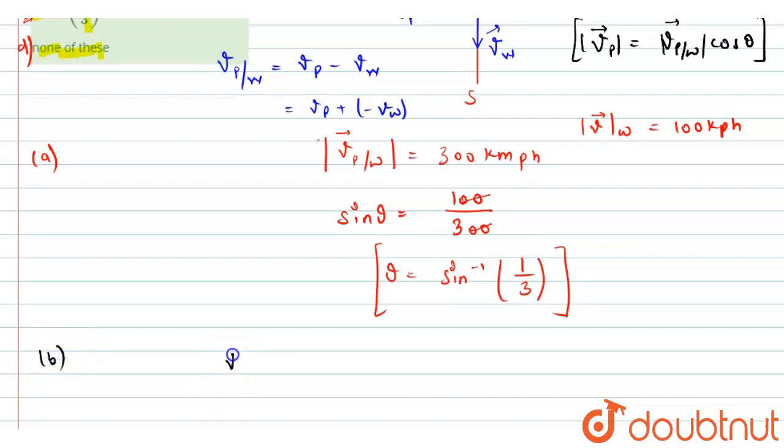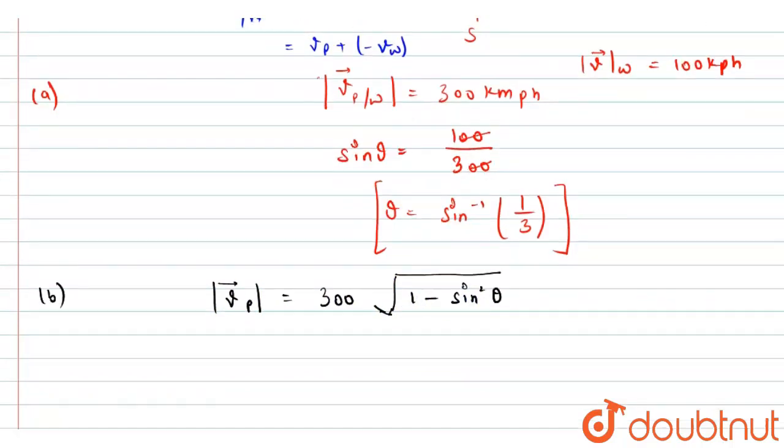So for part B, we have velocity of plane magnitude is equal to 300 into, this cos θ we can write as under the root of 1 minus sin square θ. And the value of sin θ we just have found is 1 by 3. So here, we can write 300 under the root of 1 minus 1 by 9, that is 1 by 3 whole square.